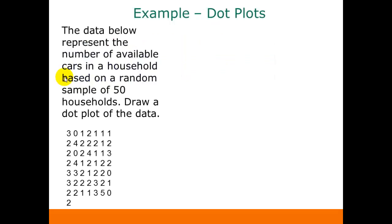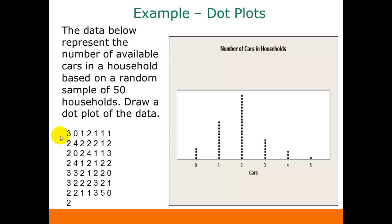Here's an example of a dot plot. We're back to our data about the number of cars in a household. So here's our dot plot, and again this is just a frequency distribution represented with dots instead of numbers. So for the zero class we have four dots, for the one class we have however many dots that is.